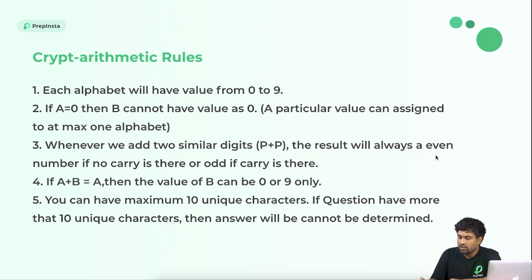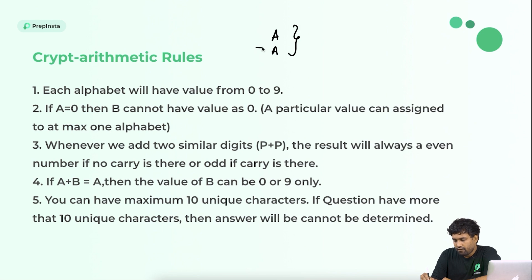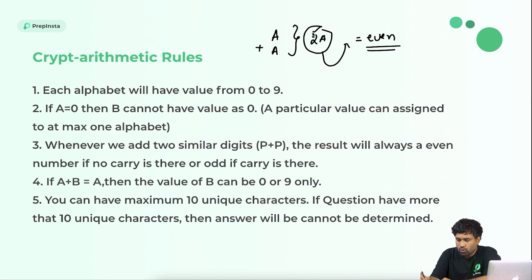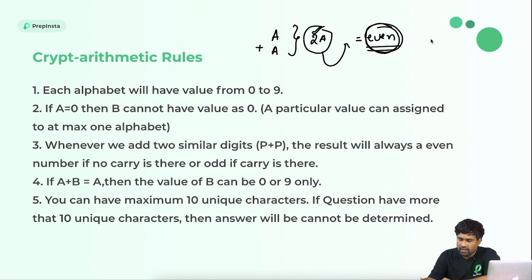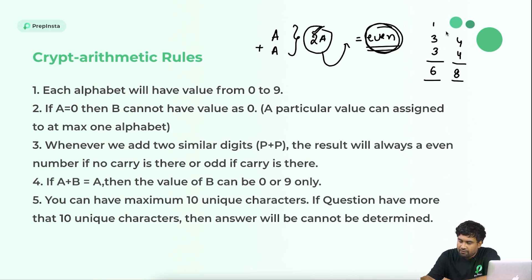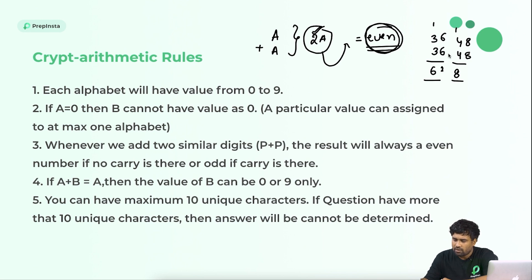Rule 3: Whenever we add two similar digits — that is, P plus P — the result is always an even number if there is no carry, or an odd number if there is a carry. For example, A plus A equals 2A, which is always even. Three plus three is six, four plus four is eight — always even. You will get an odd result only if there is a carry from the preceding column.